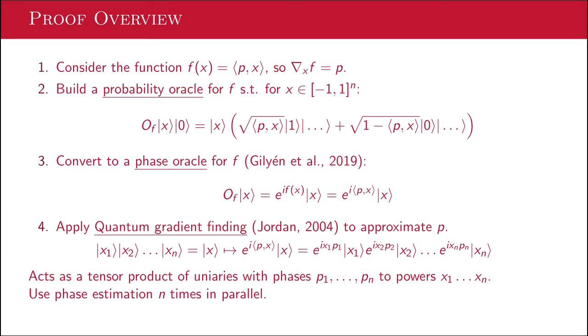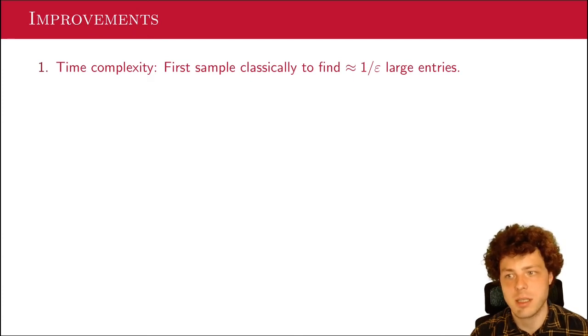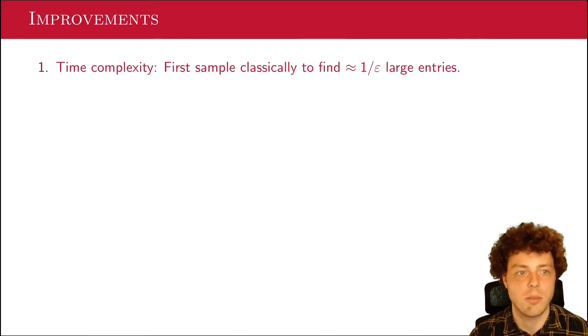And I want to talk a little bit about improvements to this, which is actually a majority of the paper, getting the result a bit nicer. And the first one I want to talk about is time complexity, because the time complexity of the base algorithm is rather bad. It's of order n, because we need to actually apply phase estimation to all of these coordinates. So to improve the time complexity, we actually start by just sampling classically. And this finds us about 1 over epsilon large entries. And then we can just focus on these large entries and for these large entries do what we need to do. And this also gives us a sparse representation, which is sort of similar to the classical case where we just sample 1 over epsilon squared times, and we just get a sparse representation of the probability distribution.